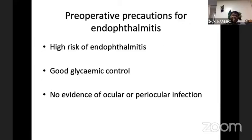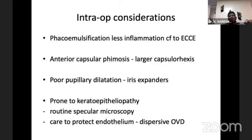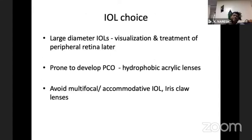Diabetics are also prone to keratoepithelopathy after cataract surgery. The IOL of choice is usually a large diameter lens. Silicon lens should be avoided, because if the patient subsequently requires vitrectomy with silicon oil injection, that would be a problem. Cataract surgery in diabetics is associated with increased risk of post-surgical macular edema, or worsening of pre-existing edema.